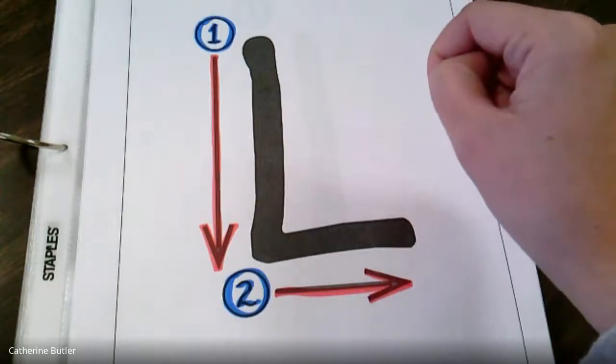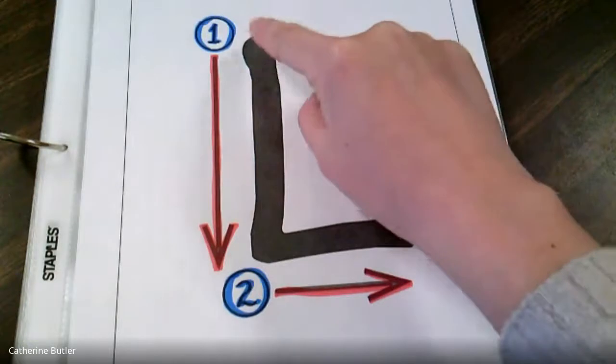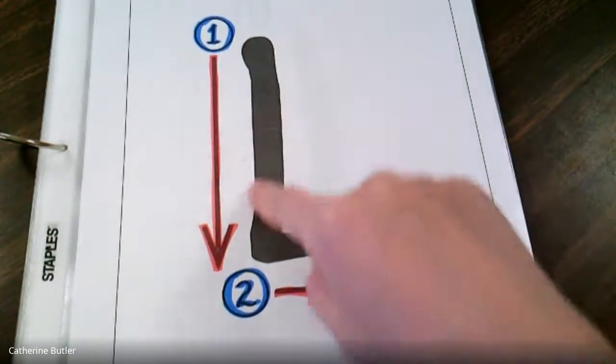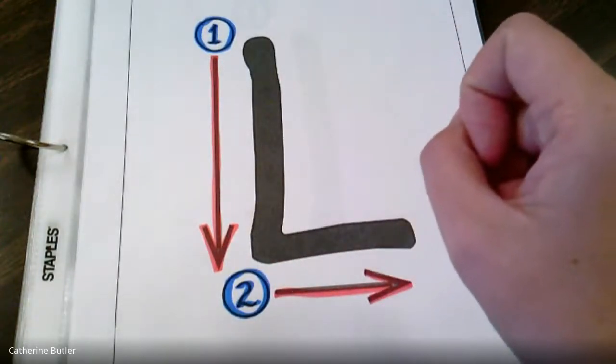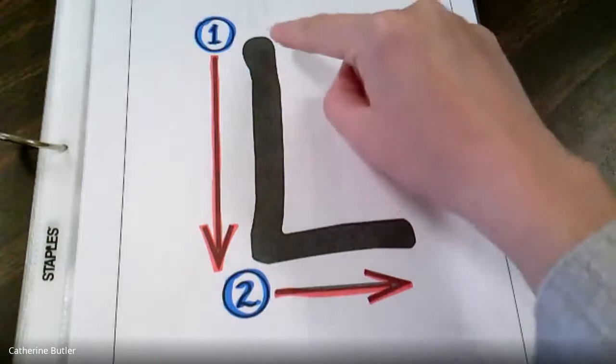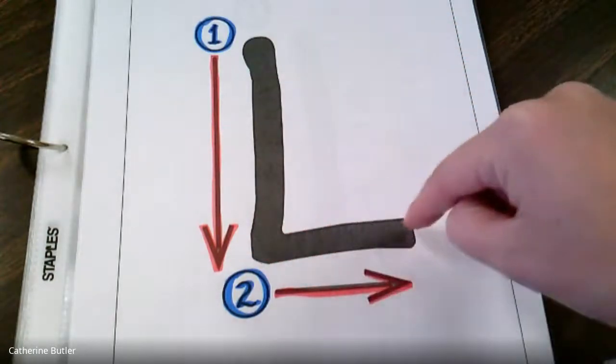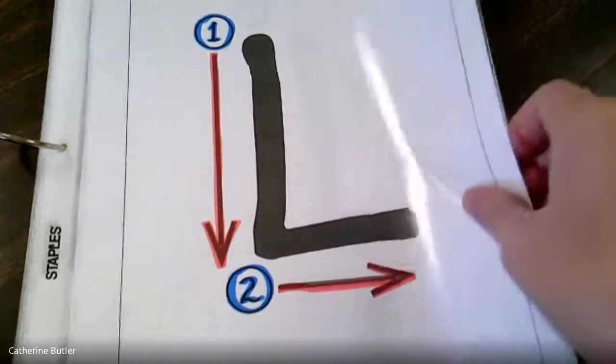Are you guys ready? I think you are too. All right. So we're going to practice together now. Put your finger at the top. Do a line down and a little line across. Yeah. One more time. Line down and a little line across. Yeah. L's are so easy. I agree.